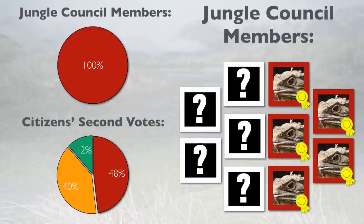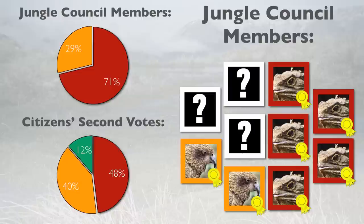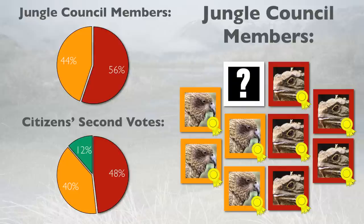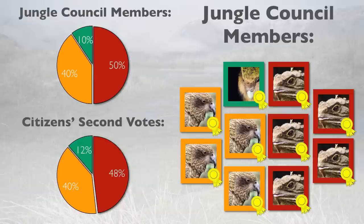Tuatara is the most over-represented and Kia the most under-represented, so Kia gets the first empty seat. This continues, adding one Kia at a time until both Tuatara and Kia are over-represented and Kakapo is under-represented, so they get the final seat. Now the Jungle Council represents, as close as possible, the actual preferences of the citizens, which is a huge improvement over the old first-past-the-post method.